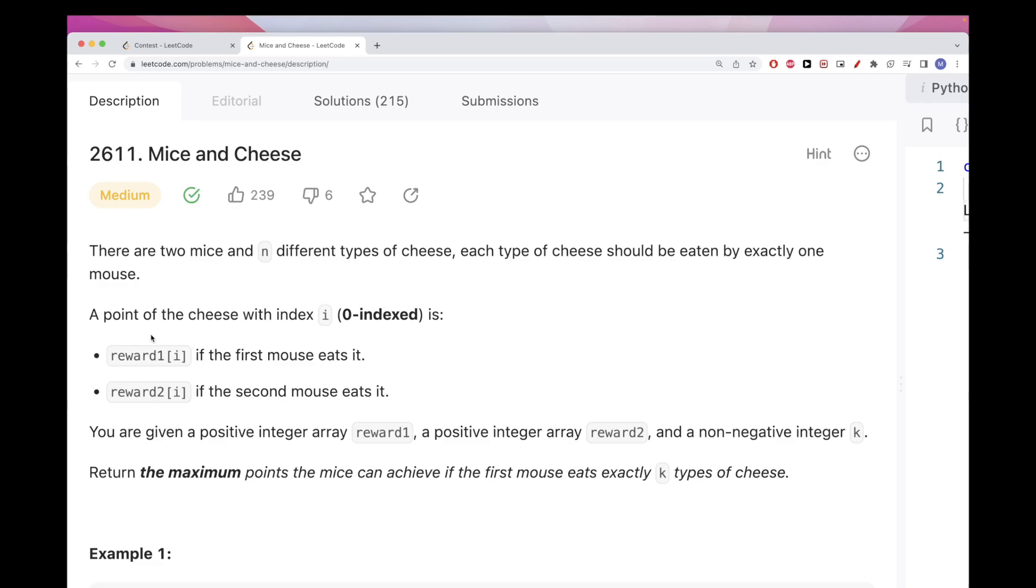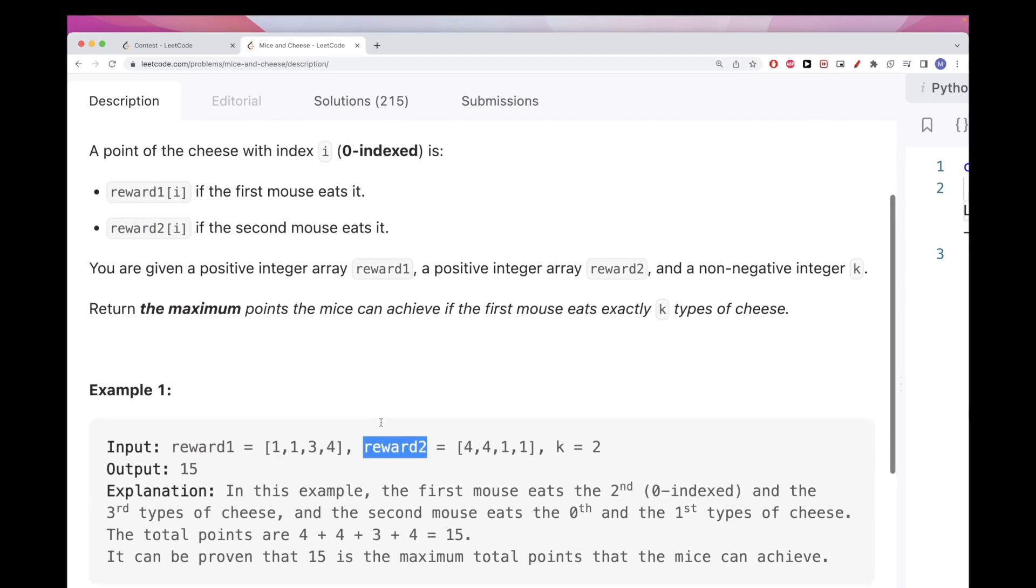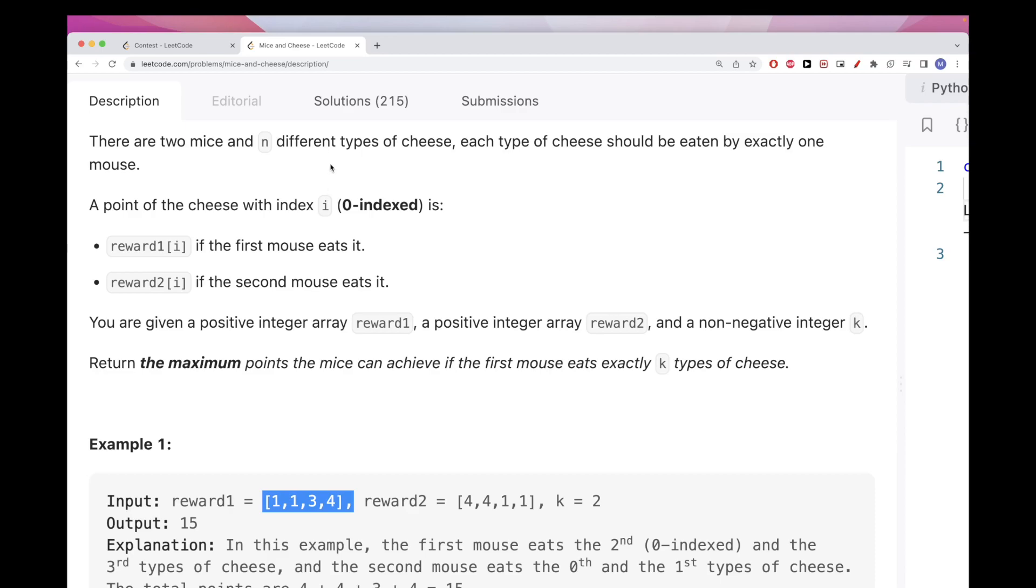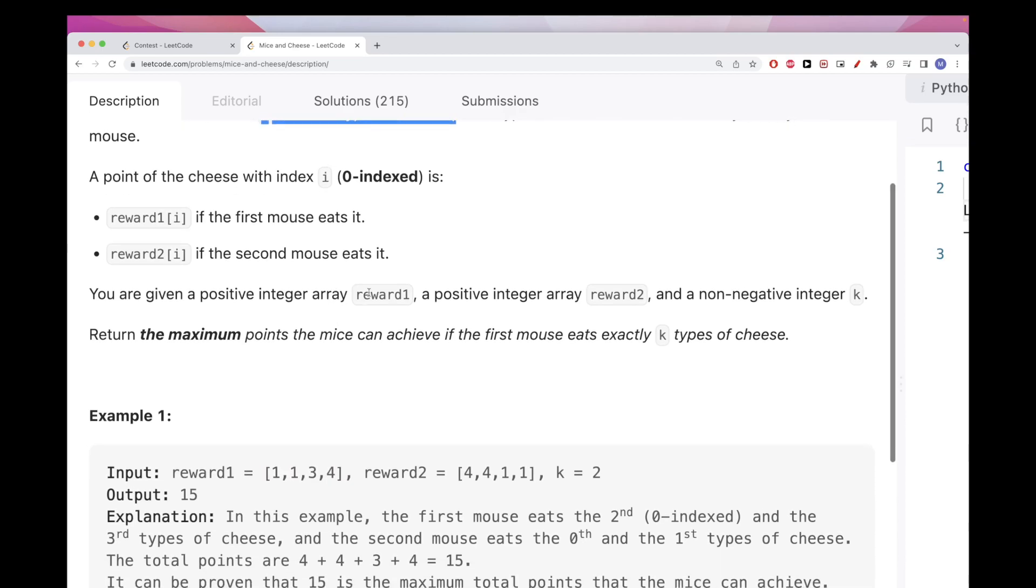We have points for each cheese eaten. For the first mouse, if that mouse eats the cheese, we can take points from reward 1, which are the rewards for mouse 1. So for cheese i, if the first mouse eats it, we get reward 1 at index i points. If the second mouse eats it, we get reward 2 at index i, and both arrays are given to us. We have N cheeses, and N is the same as the length of these reward arrays, and those lengths represent the N types of cheese we have.